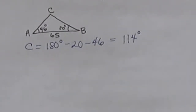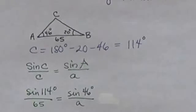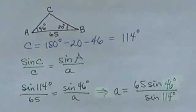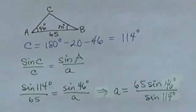Let's start with side length A. I'll use the two pieces of the law of sines proportion involving C and A. For C, I know both the angle and the side length, and for A I know the angle, so I can solve for the side length. Sine of 114 degrees divided by 65 equals sine of 46 degrees divided by A. So A equals 65 times the sine of 46 degrees divided by the sine of 114 degrees. Make sure you include parentheses correctly and that your calculator is in degrees, not radians. Plugging in, A is approximately 51.18.